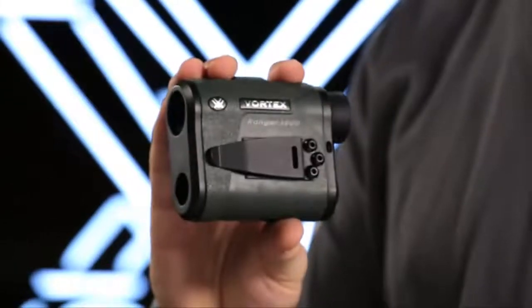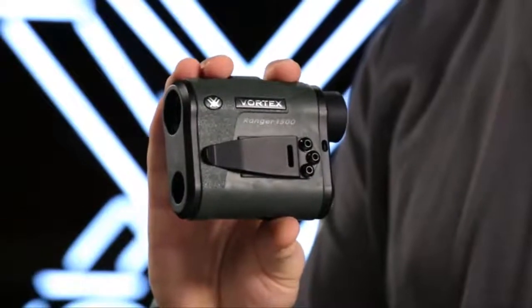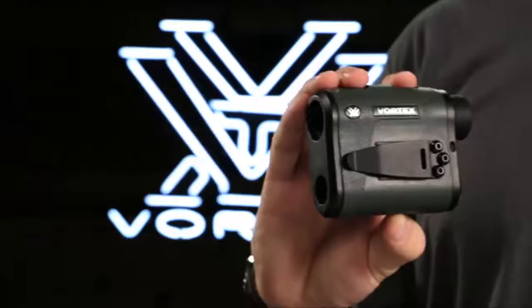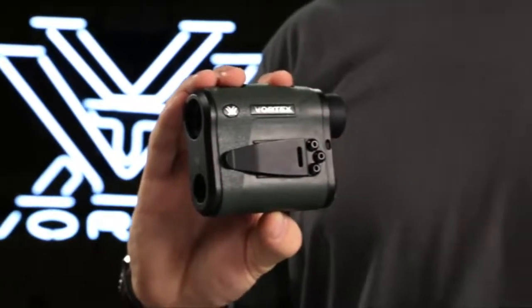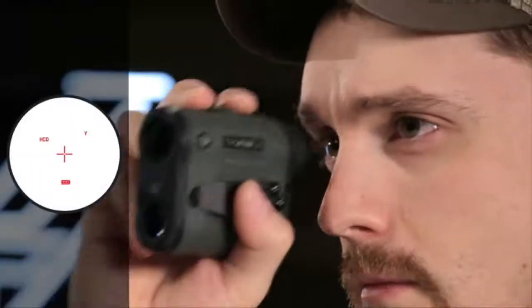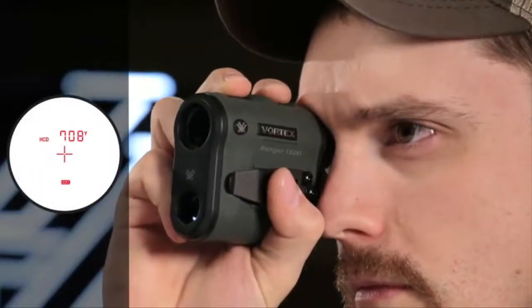The Ranger 1800 Range Finder is easy to use and features a clean, illuminated display and highly intuitive menu. The Ranger 1800 is capable of ranging up to 1,800 yards.